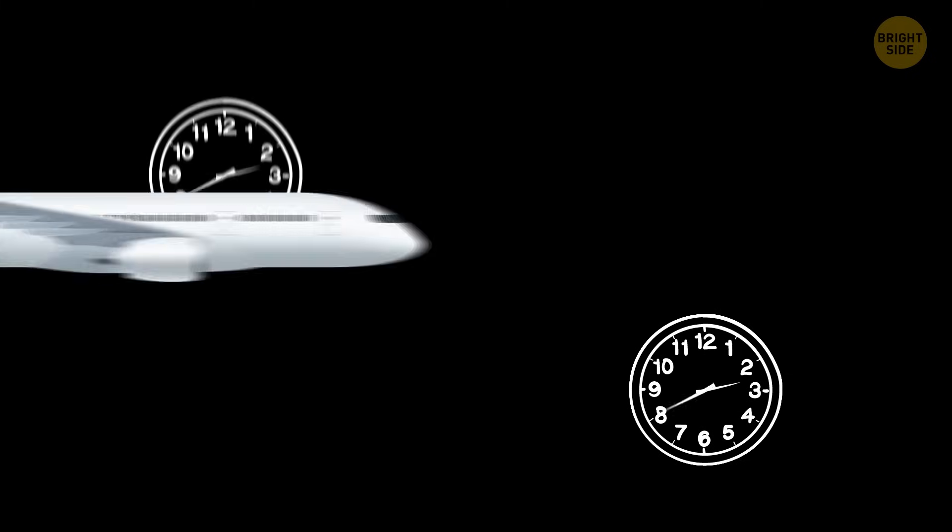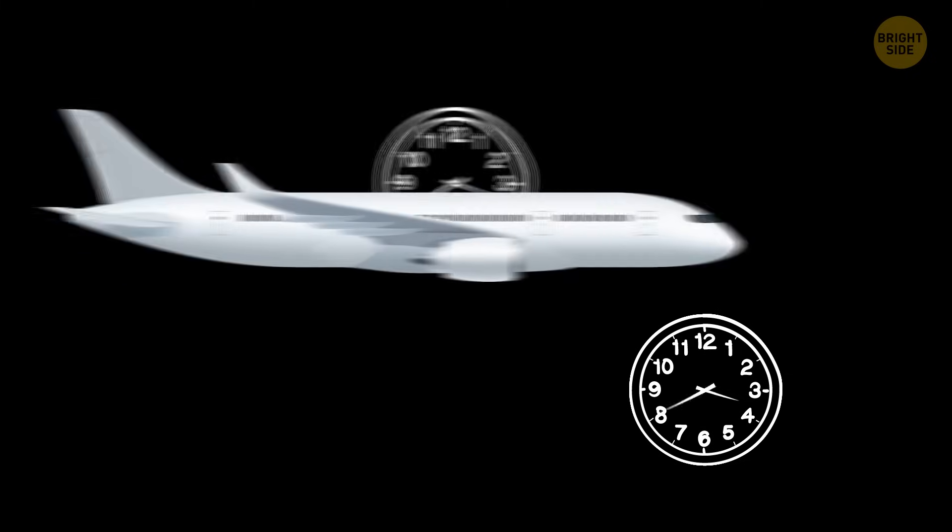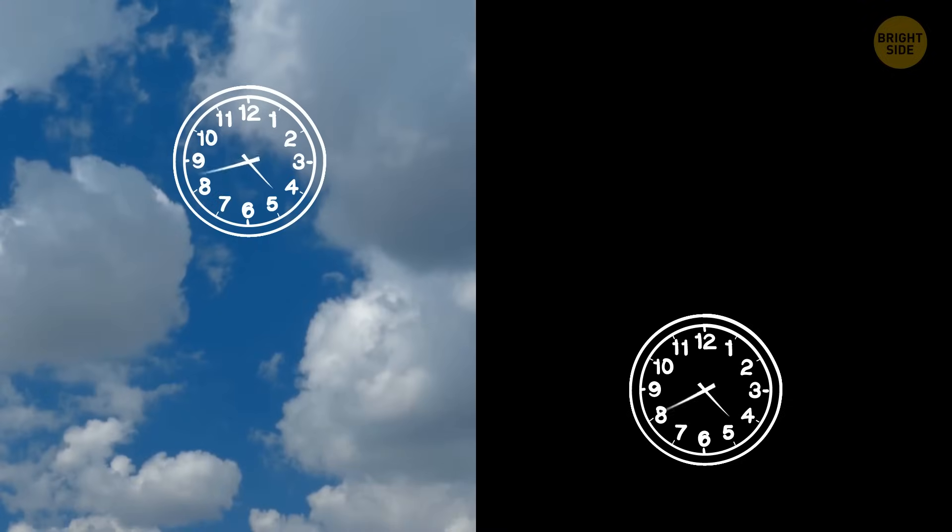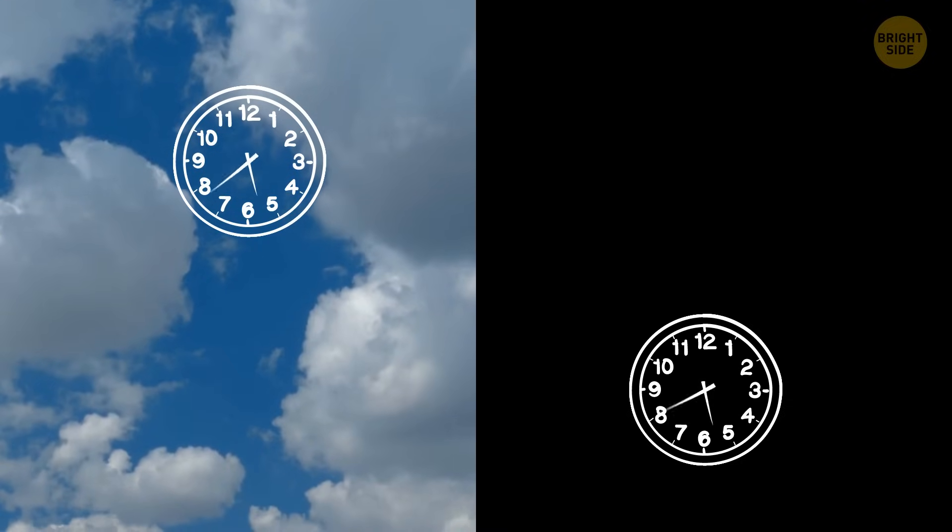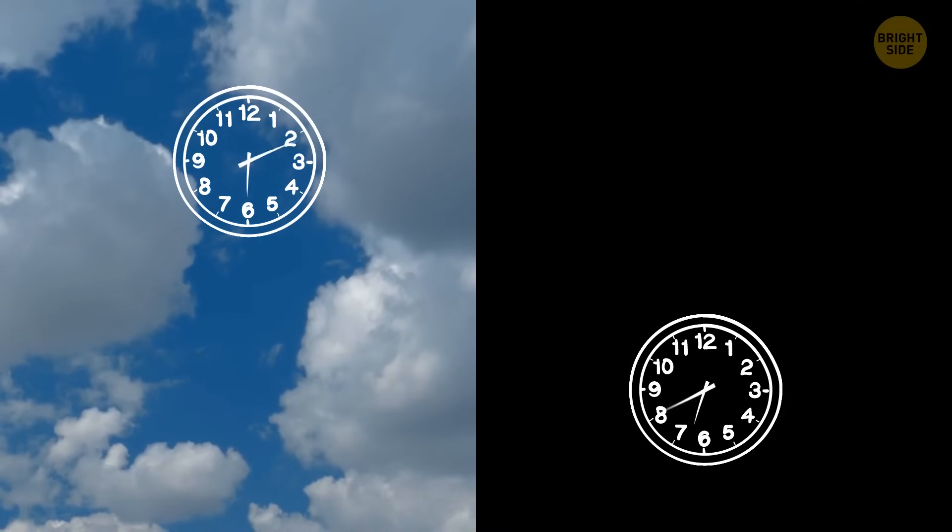They did it with the help of two identical clocks. One was placed on a jet, and one stayed on the ground. They found that the clock on the jet ticked slower than the one on the ground because of how fast the jet was moving.